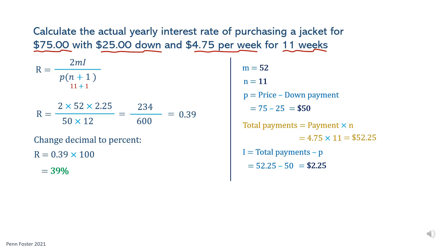This answer looks ambiguous. In real life, most people are not willing to pay a whopping 39% just to own a $75 jacket. It's very possible that this formula was designed to calculate the annual interest rate on large purchases like houses and cars. For the purpose of this lesson, use this formula as shown, but just know that some rates won't look realistic, especially for small purchases like clothes.